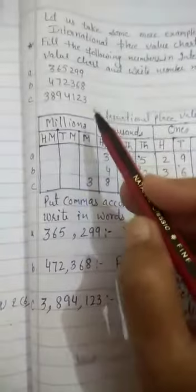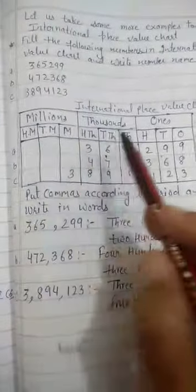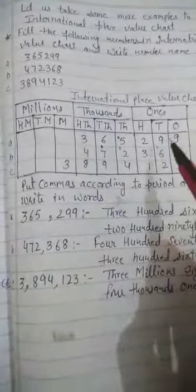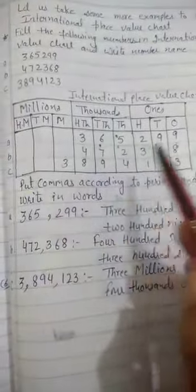Three numbers are there. First of all, draw international place value chart and write these numbers according to their places.